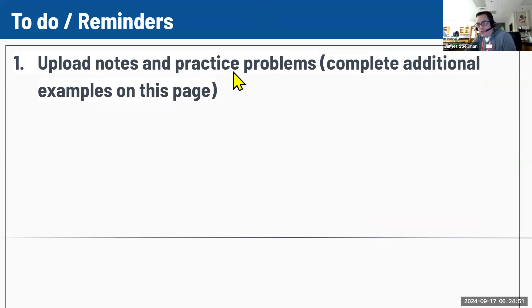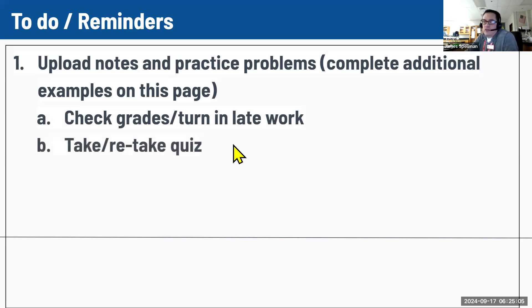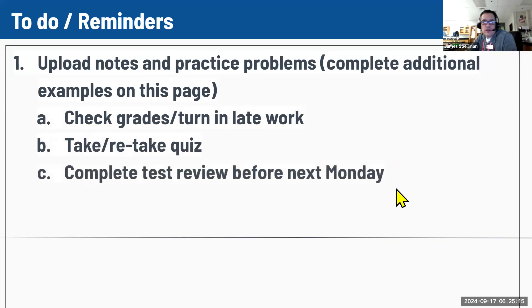So finish up your practice problems. There's some additional examples on your note pages that you need to do. I'll probably have answers posted in the classroom. Make sure your notes get uploaded so that you can get credit for your work. Check your grades. Make sure that there's nothing missing. Get your late stuff turned in. If you need to take or retake the quiz, you need to do that. If you check your grades, you can make your little slider thingy in your gradebook. You can see how much changing a grade or retaking the quiz might help your grade. We do have a test next week. So you need to complete your test review before next Monday. And for some reason, there's a random number seven. I don't know. Maybe that's for good luck. All right. Thanks for hanging in there with me and take care.